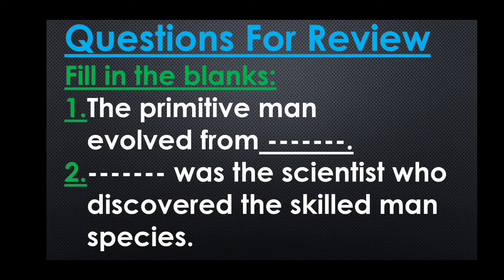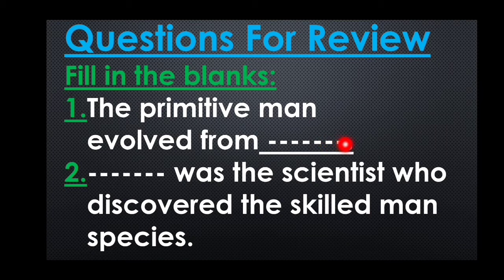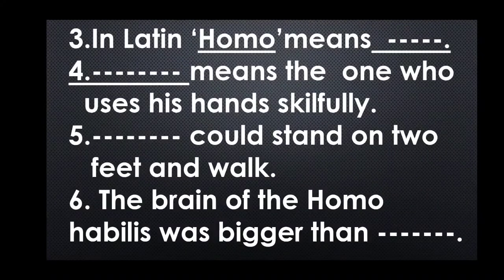In this video we will only do 5.1. Here are a few questions for you. Read your textbook and answer these questions. Fill in the blanks: 1. The primitive man evolved from ___. 2. ___ was a scientist who discovered the skilled man species. 3. In Latin, Homo means ___. 4. ___ means the one who uses his hands skillfully.